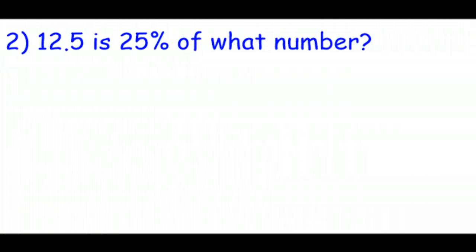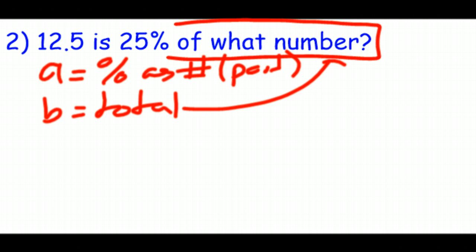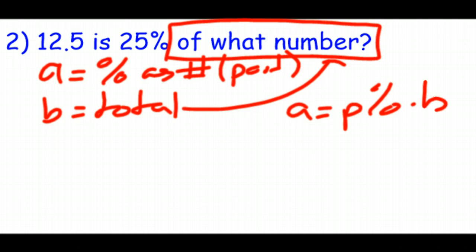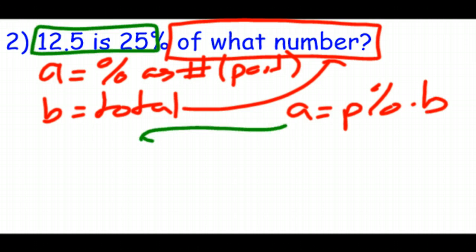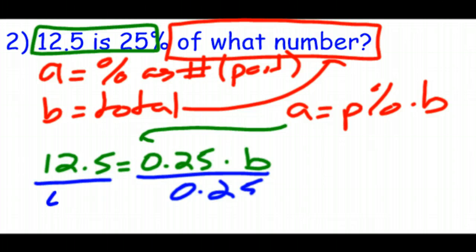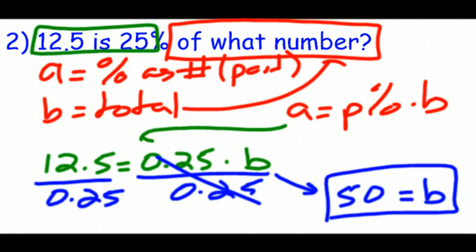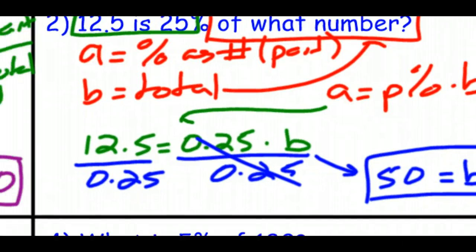Number two: 12.5 is 25% of what number? A is the part — 12.5. P percent is 25%, which is 0.25 or one-fourth. B is our unknown total. So 12.5 equals 0.25 times B. Divide both sides by 0.25. 12.5 divided by 0.25 is 50. So 12.5 is 25% of 50.